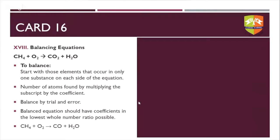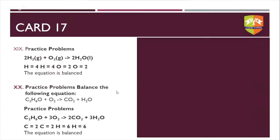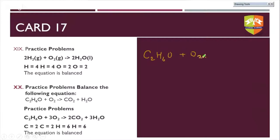Let's look at some practice problems. We have C₂H₆O + O₂ → CO₂ + H₂O — this could be an ether or alcohol. Using the table method, write carbons, hydrogens, and oxygens for both reactant and product sides.